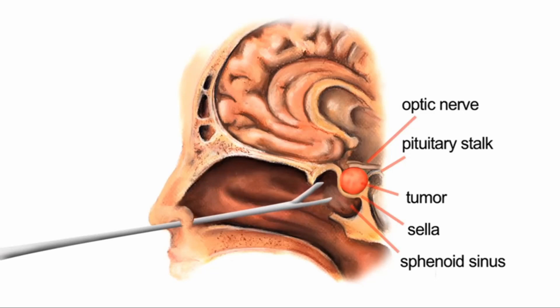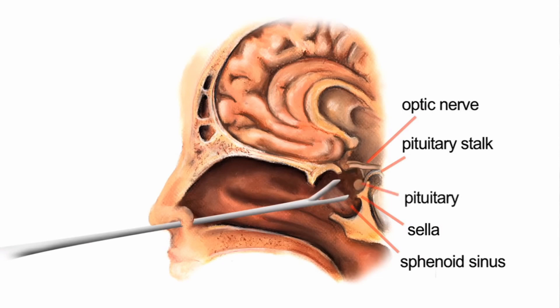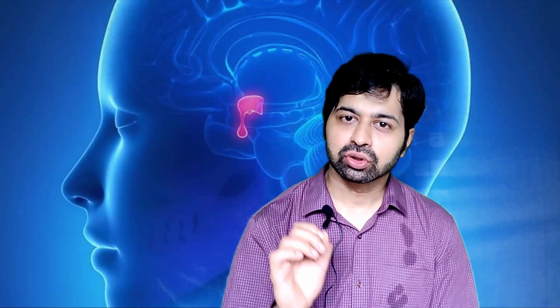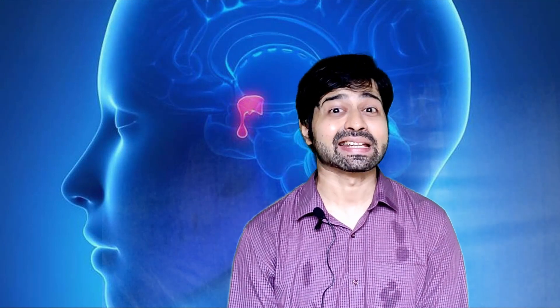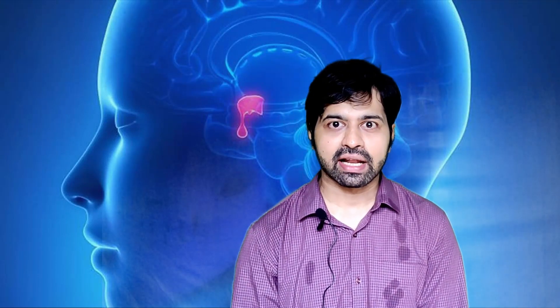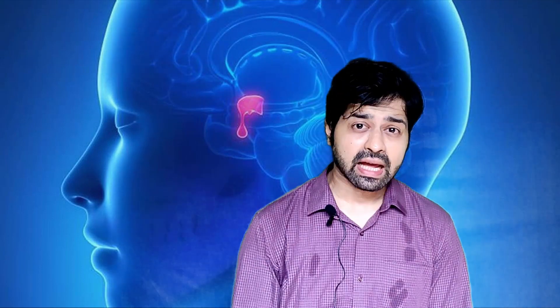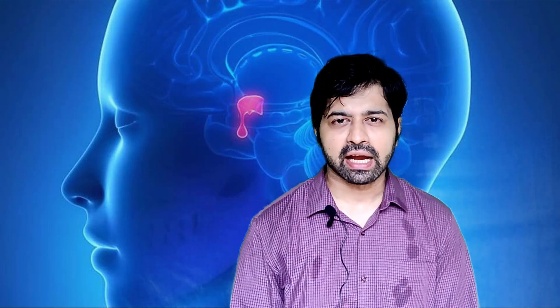Most of the time the operative approach to the tumor is through the nose — this is the shortest and safest route to the tumor. Just like any other operative procedure, this operation comes with its own complication risks. The most common complication is a breach of the arachnoid layer between the tumor and the brain, leading to leak of CSF through the nose in the post-operative period. Another commonly encountered complication is imbalance in the level of ADH, causing increase or decrease in the sodium level in the body, called as diabetes insipidus or SIADH respectively.